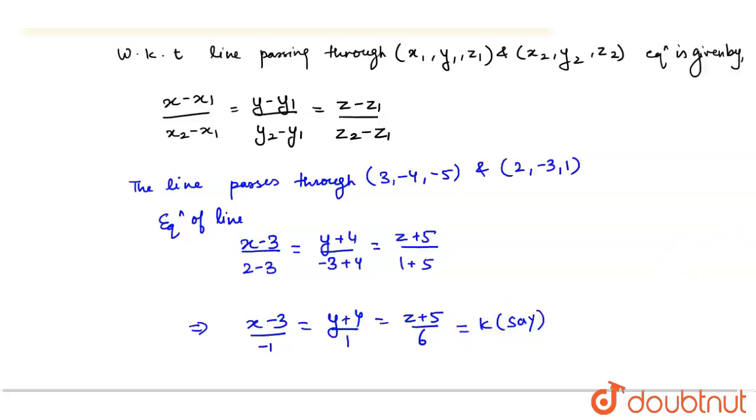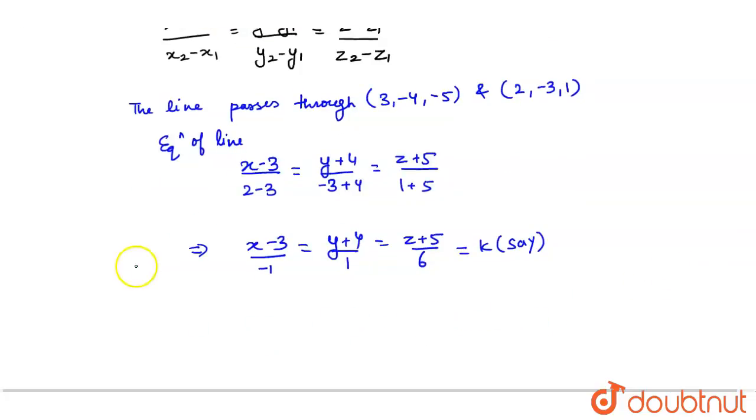Now, on simplifying, if we simplify this, if it is equal to k, then x - 3 = -k, so x = 3 - k. Y + 4 = k, so y = k - 4, and z = 6k - 5.